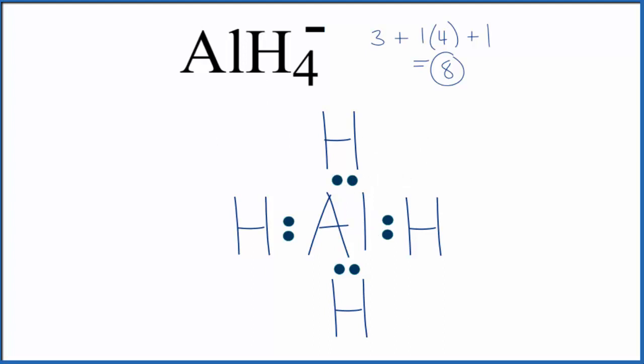And because it's an ion, we do need to put brackets around and then we'll put a negative sign right out here. So this is the Lewis structure for AlH4 minus.